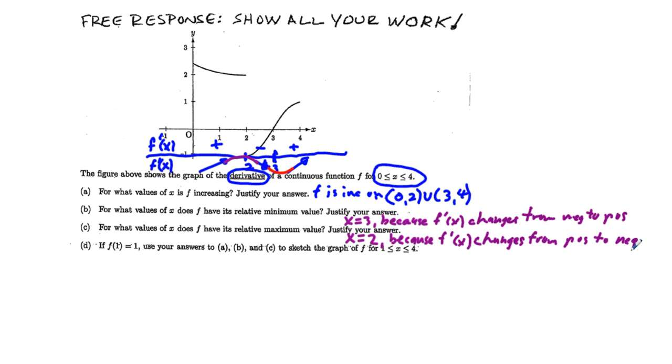And why? Because f prime of x changes from positive to negative. We had some students who did pretty well in these parts a, b, and c. Okay, part d. If f of 1 equals 1, use your answers to a, b, and c to sketch the graph of f between x equals 1 and x equals 4. Not the whole thing, I was looking at 0 earlier.